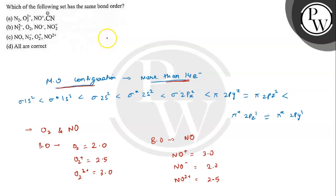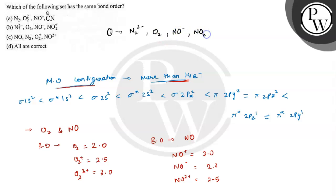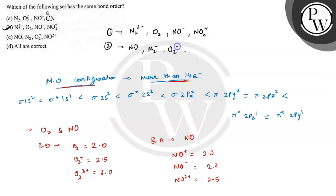After comparing the bond orders, the first pair that has the same bond order is N2²⁻, O2, NO⁻, and NO2⁺ — all with bond order 2. This is matching with option B, so option B is correct. The second pair is NO, N2⁻, O2⁺, and NO2⁺ — all with bond order 2.5. This is matching with option C, so option C is also correct.